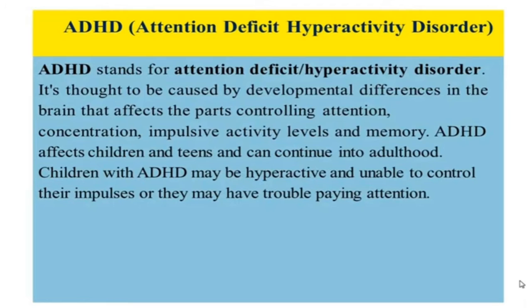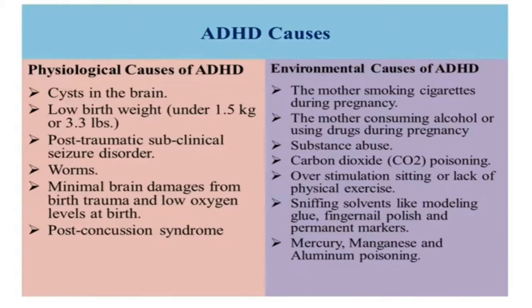Such individuals may have some problems focusing on activities. They may be hyperactive or unable to control their impulses. Now we will see ADHD causes. There are two types: physiological causes and environmental causes. Physiological causes include cysts in the brain, low birth weight under 1.5 kg or 3.3 lbs, post-traumatic subclinical seizure disorder, minimal brain damage from birth trauma, low oxygen levels at birth, and post-concussion syndrome.